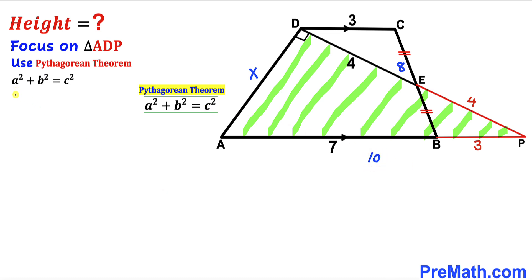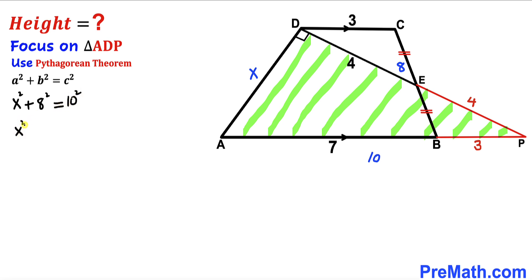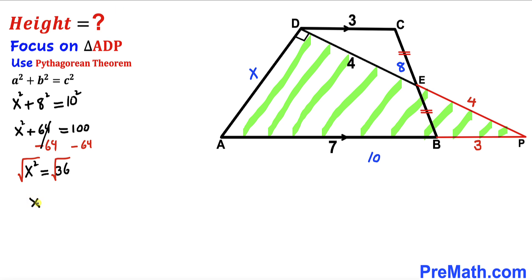Filling in the Pythagorean formula: x squared plus 8 squared equals 10 squared, which simplifies to x squared plus 64 equals 100. Subtracting 64 from both sides gives x squared equals 36. Taking the square root of both sides, x equals positive 6 units.